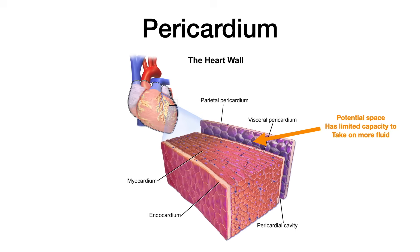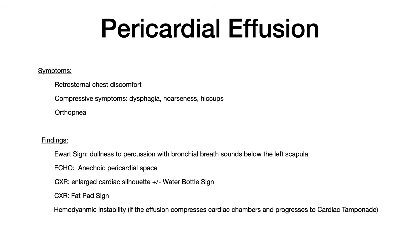To be very clear: constrictive pericarditis is when the heart has tried to heal itself from acute pericarditis, and the granulation tissue forming is reducing pericardial elasticity. If you have that plus a pericardial effusion, it is technically a subtype known as effusive constrictive pericarditis. If there's fluid in that potential space between the parietal and visceral layers, as that fluid accumulates, you get a pericardial effusion.